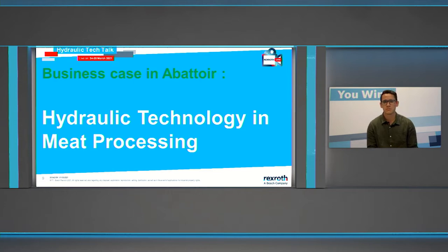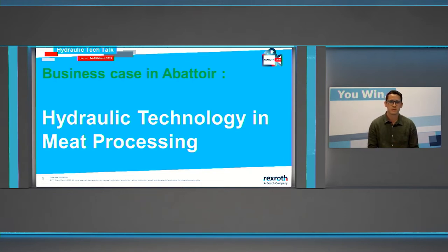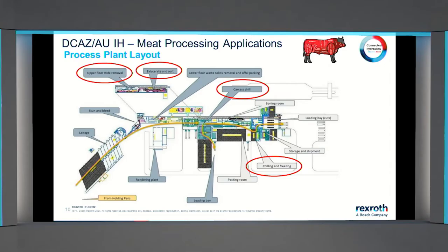We'll then segue into examples of solutions we have provided for customers and compare them to typical hydraulic systems. On screen you should see a generic flow plan for a meatworks. Products flow from left to right — the cows come in on the left and leave on the right as cuts of steak, dispatched locally and internationally. A few of the applications and processes have been circled in red — these are areas where you can expect to see hydraulic actuation.